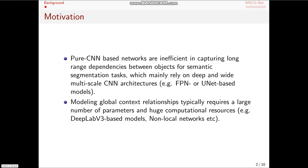for instance the famous UNets and FPN based models. And also modeling global context relationships typically demands a large number of parameters and consumes huge computational resources like the DeepLab v3 based models and non-local neural networks.